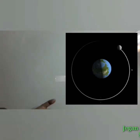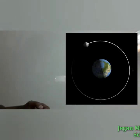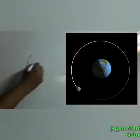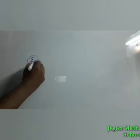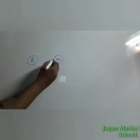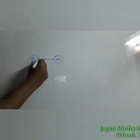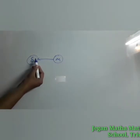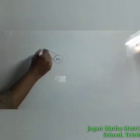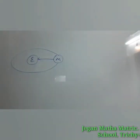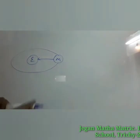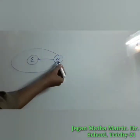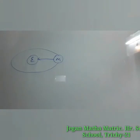We have taken the earth and the moon. The moon is attracted by the earth, but the moon is not moving towards the earth in the direction of the force — it is actually moving in an elliptical orbit. Here the direction of motion and the direction of force are not the same.